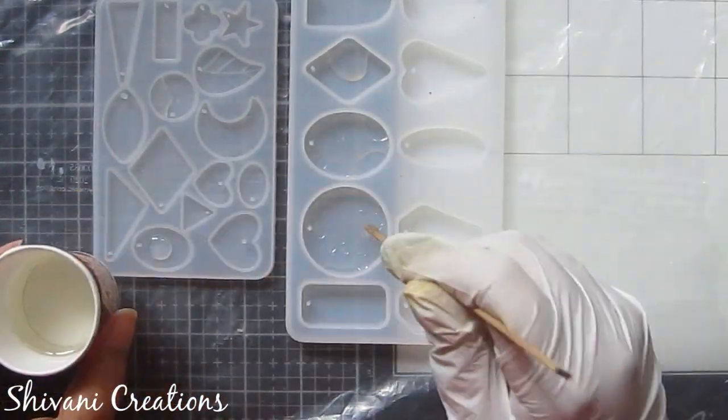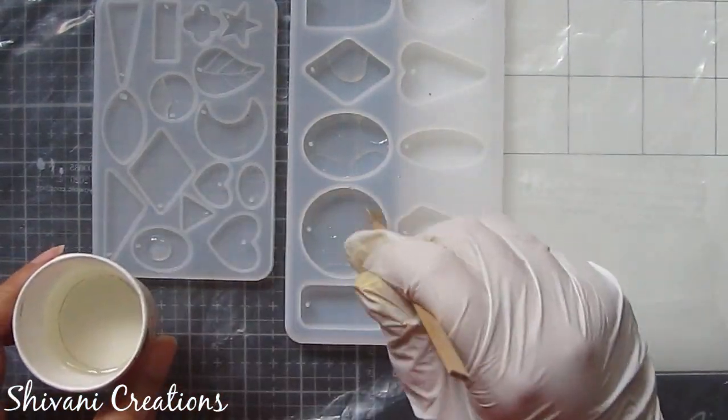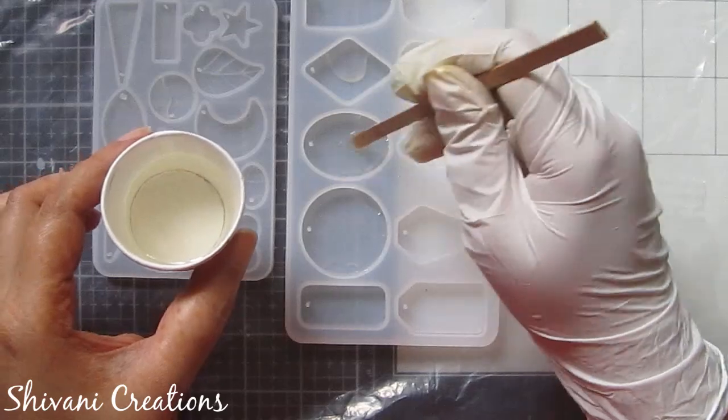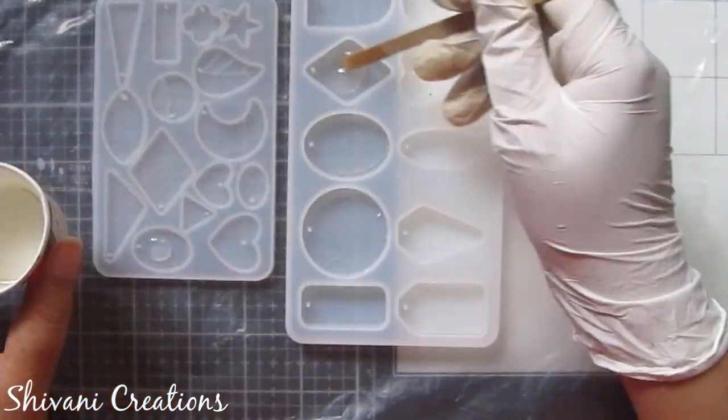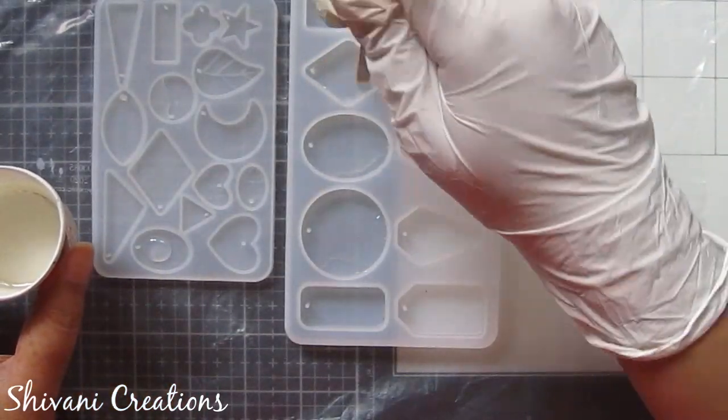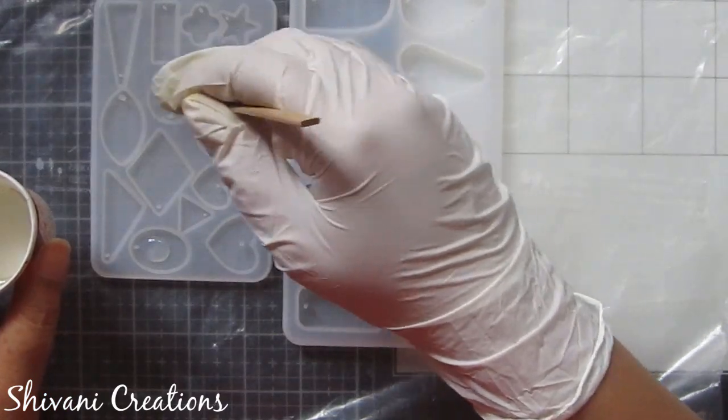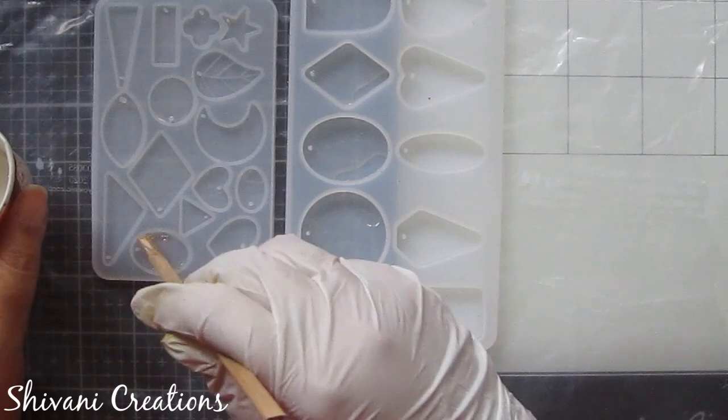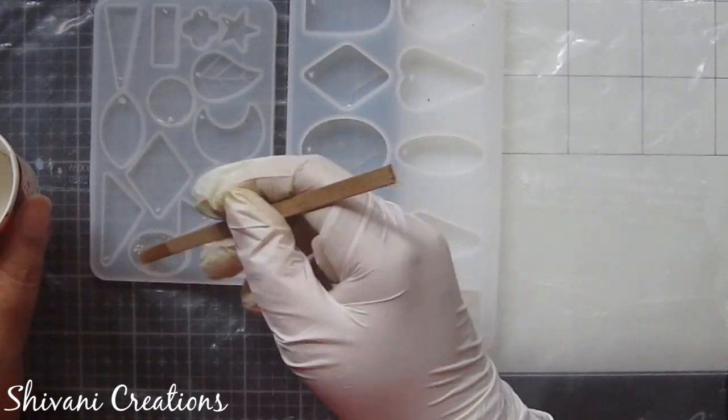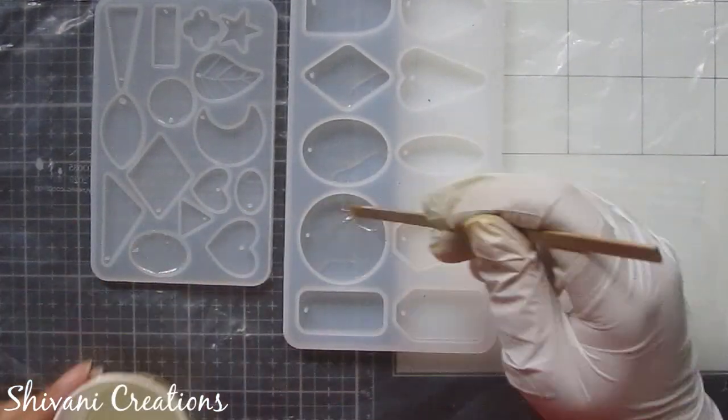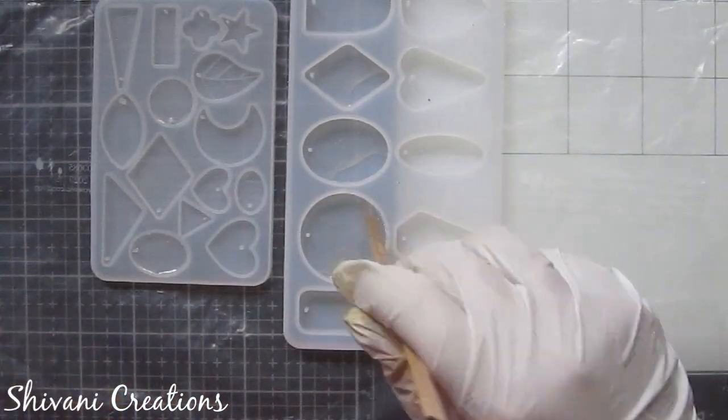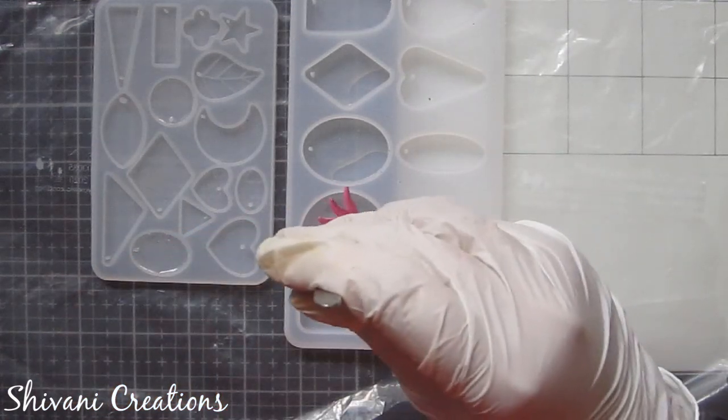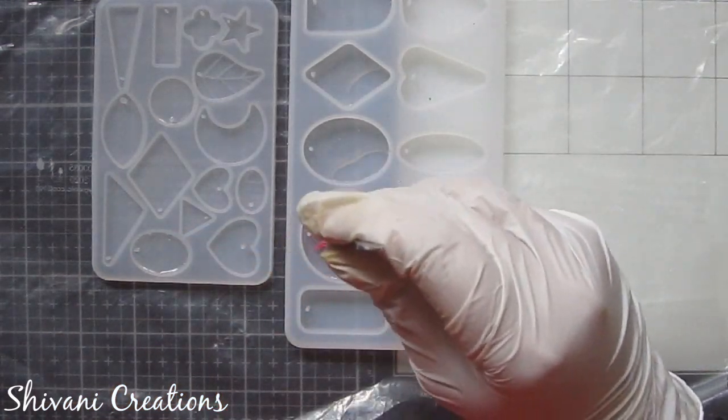If required you can add some more resin in the base. And then with the help of tweezers I will start arranging my flowers on the resin.